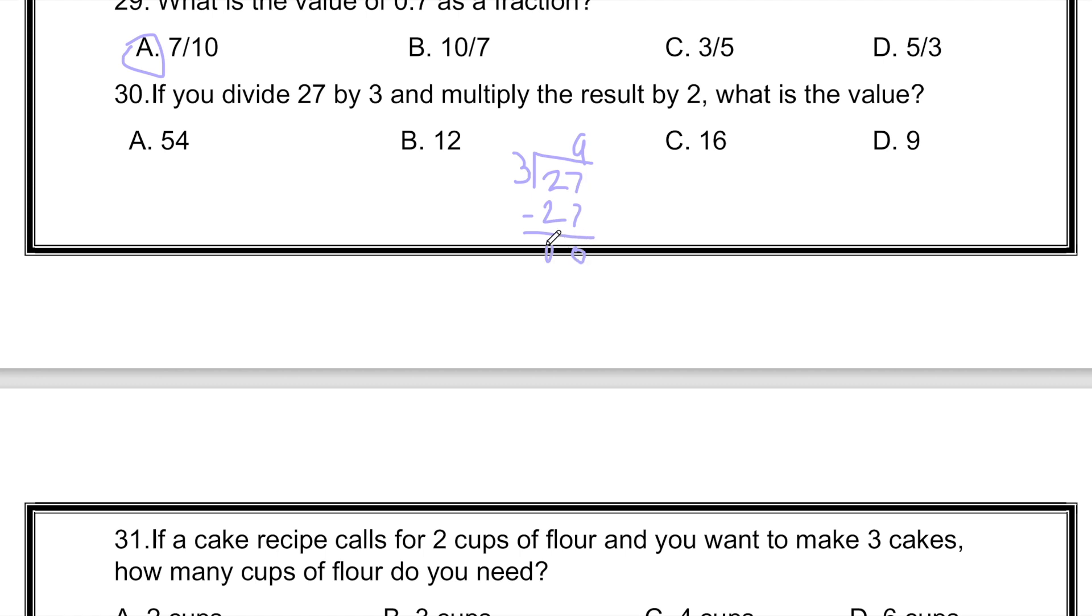2 minus 2 is 0, so the remainder is 0, meaning the answer is 9. So the result is 9, and then we multiply 9 times 2, that is 18. There is another mistake over here, the answer will be 18.